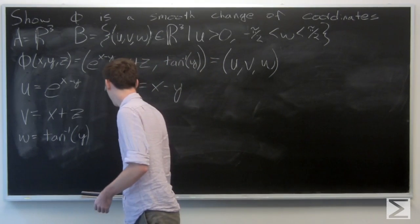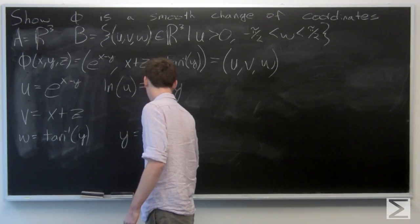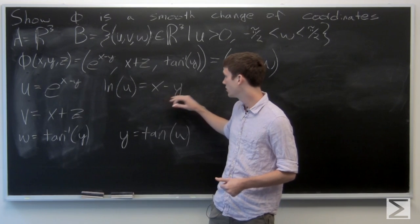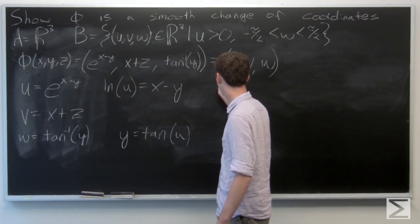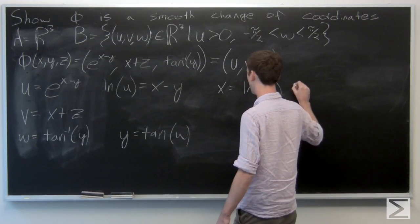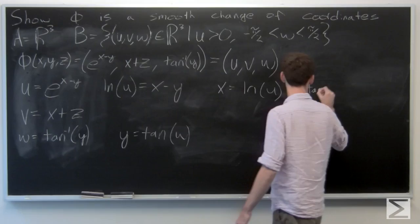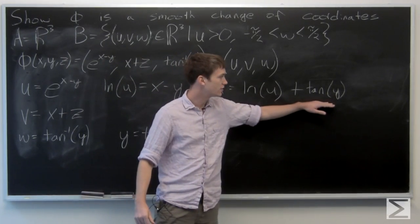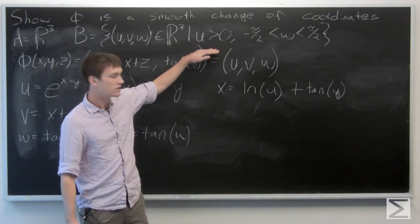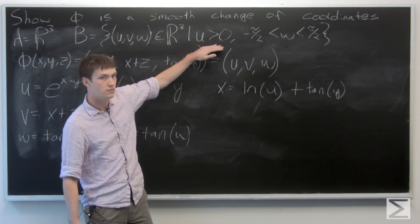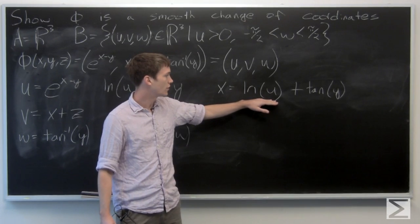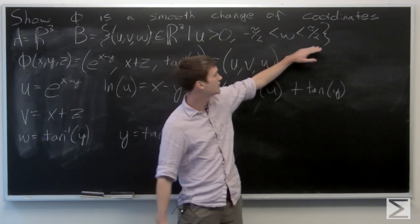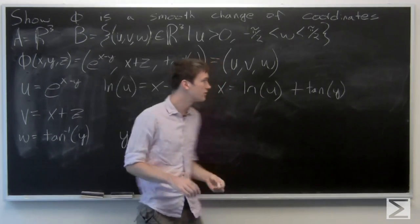We can solve for y right away: y is the tangent of w. Now we can plug into our first equation for y. We get that x is equal to the natural log of u plus the tangent of w — this should be tangent of w, not y.